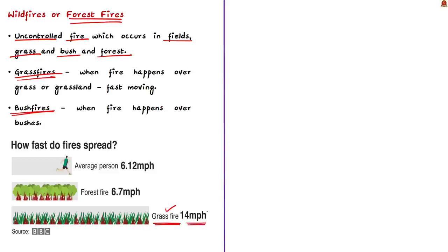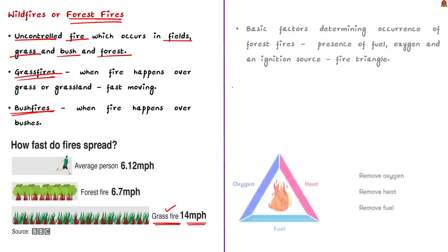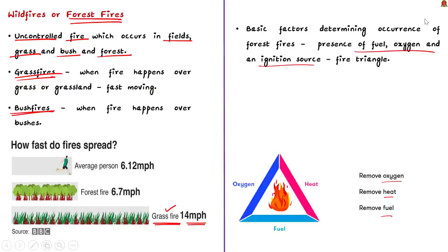There are certain basic factors which determine whether a forest fire will occur or not. These include the presence of fuel, oxygen and an ignition source. These three are the components of fire triangle. Only when these three factors are present can a fire happen. If we remove any one component then the fire will go off.